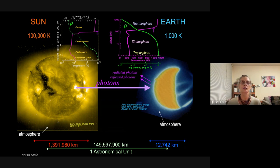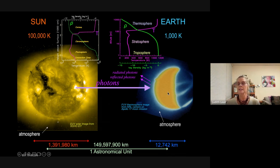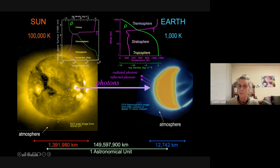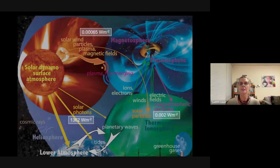Having established the variability of the sun and the irradiance, I'll show how those changes affect our environment from the surface to space. The sun radiates approximately as a black body at almost 6000 Kelvin. The earth is also a black body but much cooler, and both radiate to space. Energy comes from the core, is convected to the surface, and photons radiate from the sun to the earth.